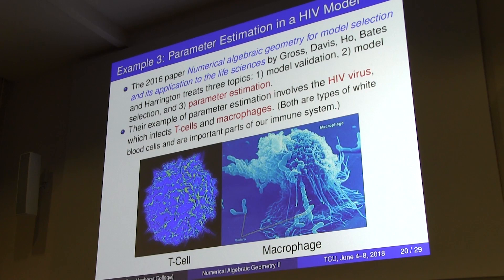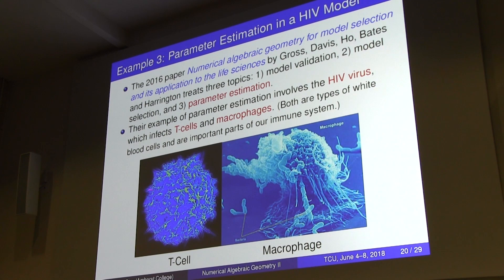In their example on parameter estimation, they use the HIV virus. In the human immune system, T cells and macrophages are both implicated in HIV infection. The model tracks T cells, infected T cells T*, macrophages M, infected macrophages M*, and virus V.